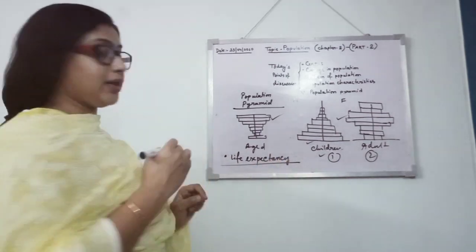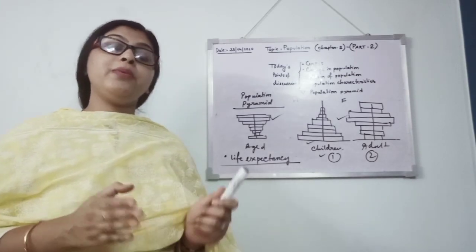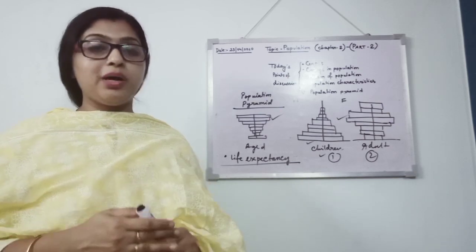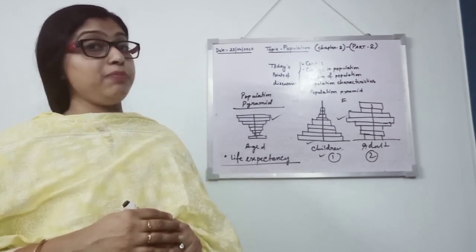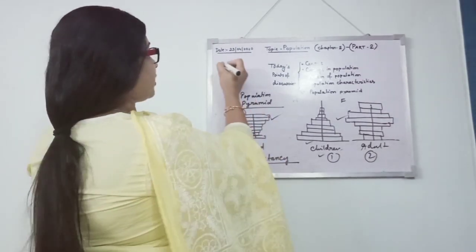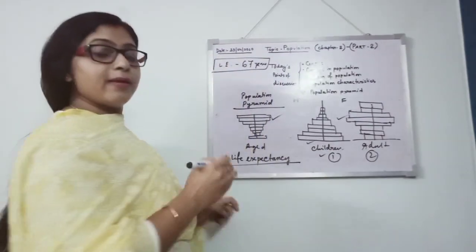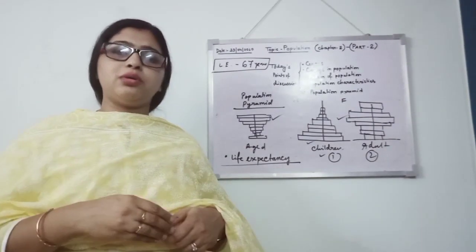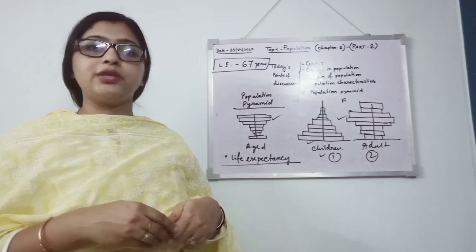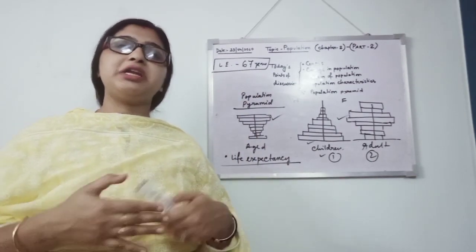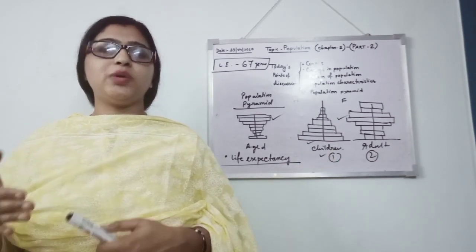So students, here we got to know a new term, what is life expectancy. Means number of years a person is expected to live from birth. What is the average year a person can expect to live, that is known as life expectancy. In our country, the life expectancy is 67 years average. You will also think that at the time of your grandparents, they were having more age compared to that average. But yes, this is the time where we are intaking different chemicals and different foods which are not fresh. That's why the life expectancy is gradually decreasing.